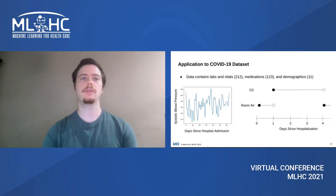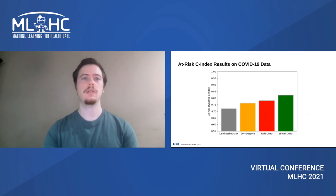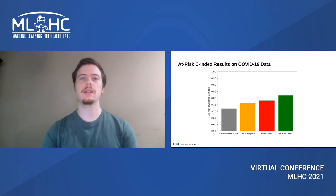We also apply our model to a COVID-19 dataset containing labs, vitals, and medication usages, with predicting time until severe COVID onset as the goal. For this application, as well as others, our model is competitive with more complex modeling architectures such as dynamic deep hit on the at-risk C-index, and it also outperforms more classical survival methods such as a landmarked Cox proportional hazards model.